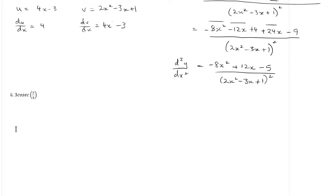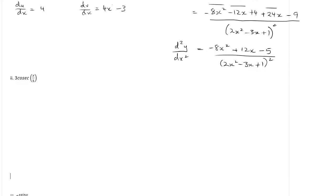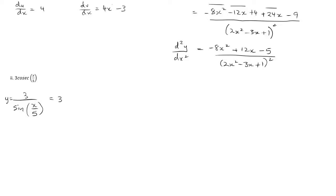Let's look at the next problem: 3 cos(x/5) times cosec. The first thing we need to do is rewrite it in terms of what it actually stands for. Cosec is equivalent to 1 over sine. So we write it as 3 sin(x/5) to the power of minus 1. It's not an inverse — it's a minus 1 on the external bracket, so please don't confuse it with an inverse.